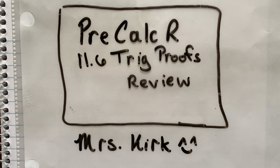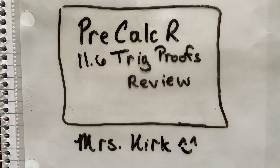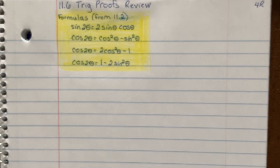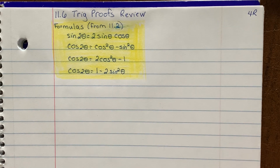Hi everybody, welcome back to our pre-calc trig notes. I'm going to go through 11.6 with you — it's just a little bit of a review of the material you're supposed to know for the units. I'm trying landscape mode today; someone suggested rotating the camera might be a good idea. Please let me know via comment or WITS mail if you prefer portrait or landscape mode. Feel free to pause at any point to copy down the notes.